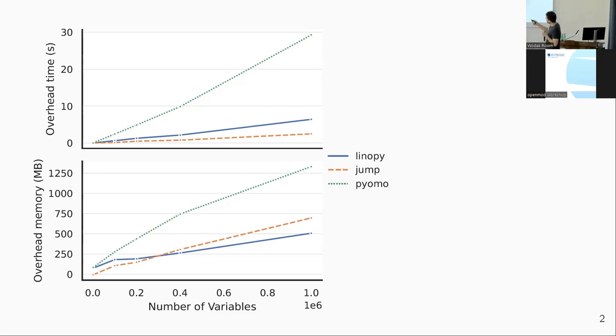Here you see the overhead time - the time needed to pass the optimization problem to the solver - and the overhead memory for Linopy, Jump, and Pyomo. There are certainly different other packages which serve the same purpose, but most of us are using Jump or Pyomo. You see that Linopy is actually quite fast, nearly as fast as Jump and even more memory efficient than Jump, which is quite an achievement.